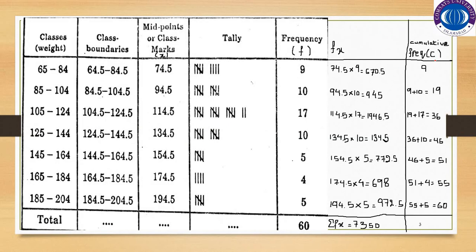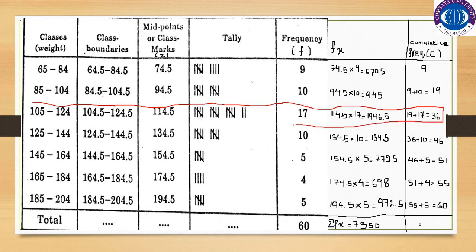We need to find which class contains the value 30 by going through the cumulative frequency column. The first cumulative frequency is 9 — it does not cover 30. The next is 19 — also does not cover 30. The next is 36, and 30 lies within this range, so we mark this as the median class.